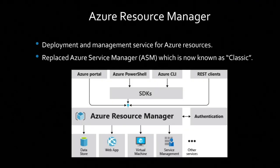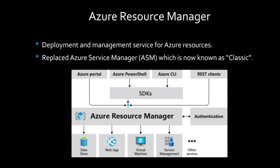Azure Resource Manager (ARM) is the way that Azure handles deployment and managing services. It used to be called Azure Service Manager — now that's known as 'classic.' There are different ways to interact with it: the portal (portal.azure.com), PowerShell, the CLI, or REST API requests directly at ARM. When you interface with ARM, it talks to a resource provider, which gives you information depending on what plane you're on. ARM also does some authentication checking to see what you have access to via RBAC.